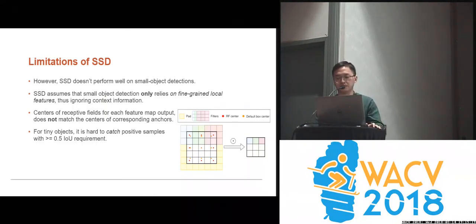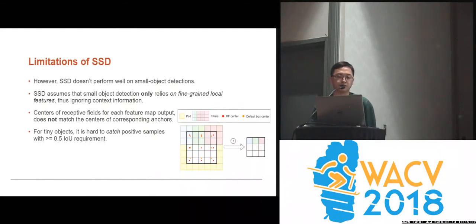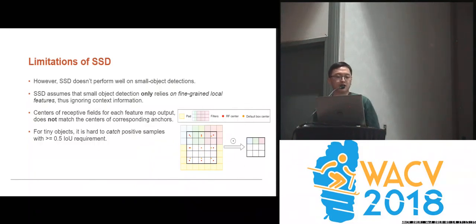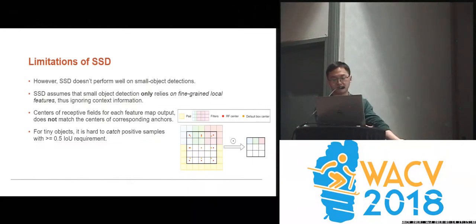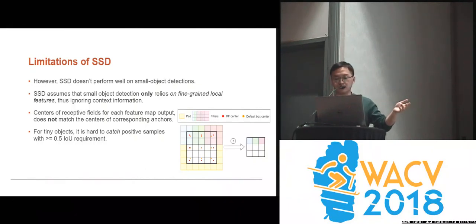There are also two other non-trivial implementation details that make a difference. The first one is that the centers of the receptive fields for each feature map output do not match the centers of the corresponding anchors. For those very tiny objects, it is very hard to catch the positive samples with a greater than or equal to 0.5 intersection over union requirement. This simple example shows that because of SSD's special anchor arrangement, there exist offsets between the centers of the anchors and the centers of the receptive fields.